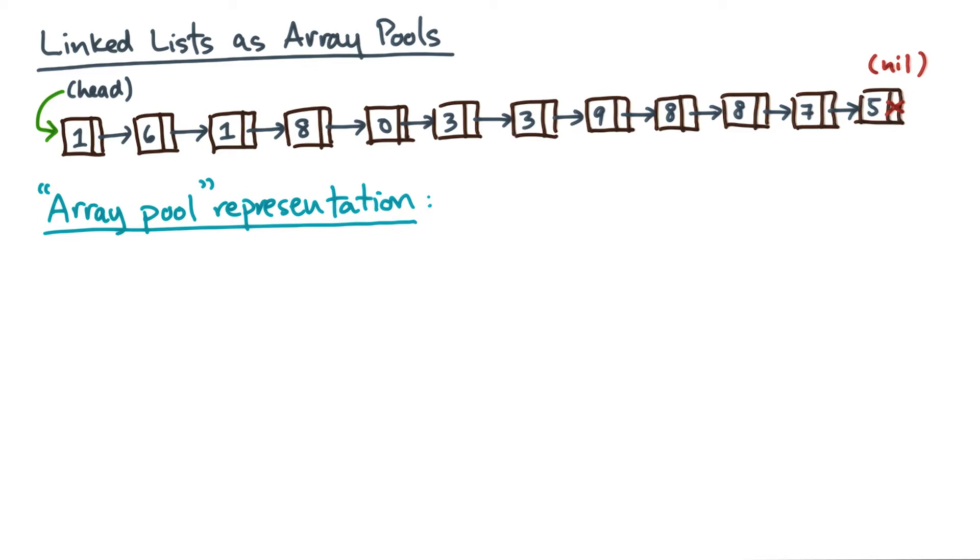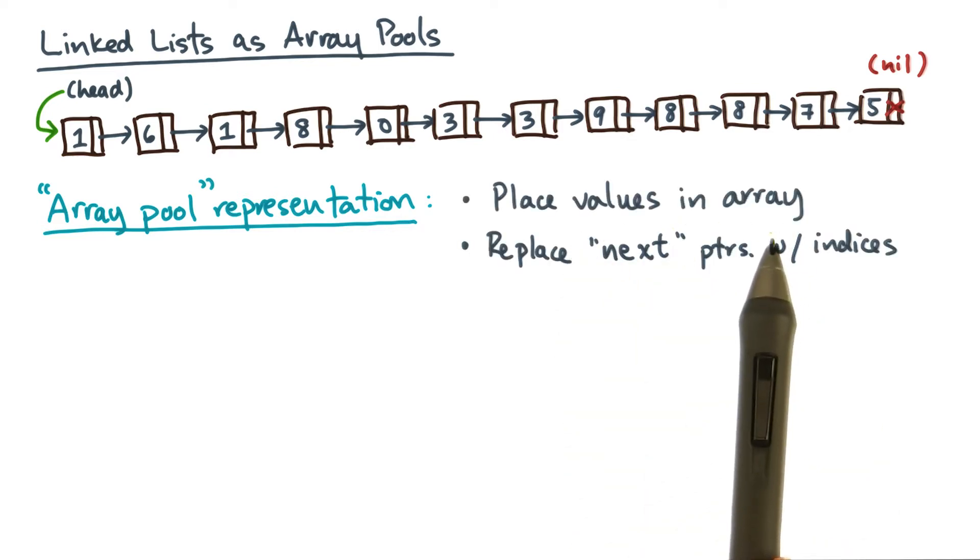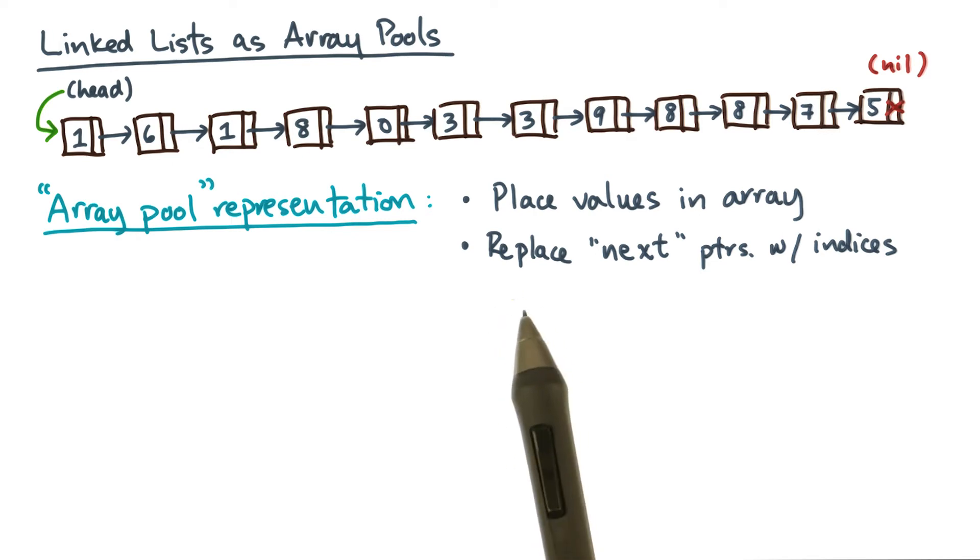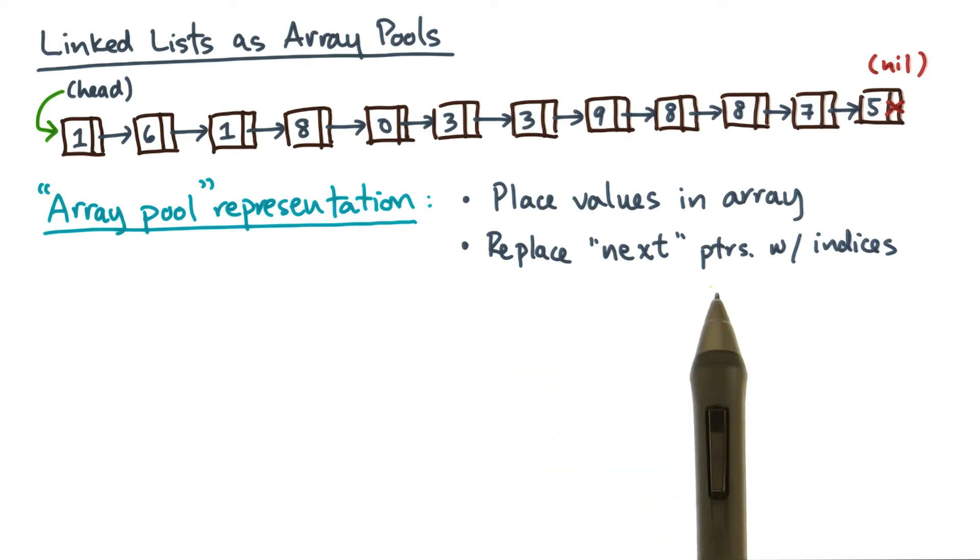Let's imagine a different way to represent a linked list, based on what I'll call an array pool. This representation has two features. First, we'll find a way to put the values in an array. And secondly, we'll replace the concept of a pointer, or a next pointer, with a next integer index. Let's see how this works.